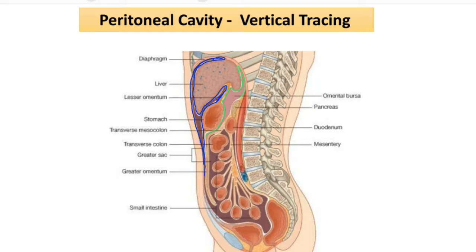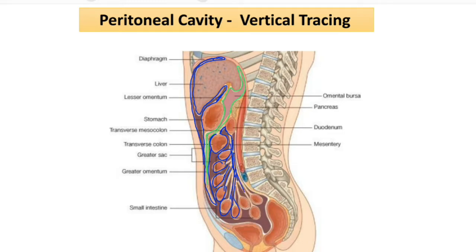The first layer is coming downward for some extent and folding on itself. Similarly, the second layer is coming downward, folding on itself, and going posteriorly, lining the posterior abdominal wall structures and meeting with the same layer. Then the first layer is coming and enclosing the transverse colon, going posteriorly, covering the anterior part of the duodenum, and going downwards.